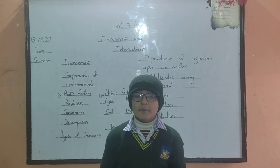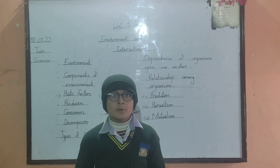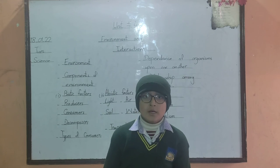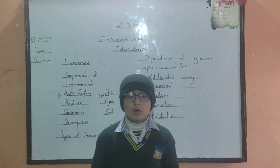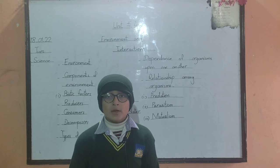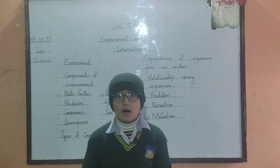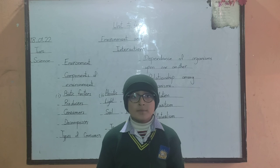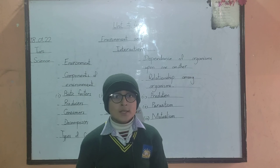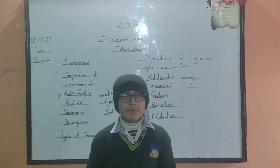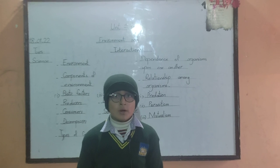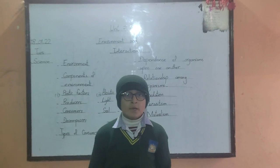Parasitism is a relation in which one organism harms the other but does not kill it. For example, a mosquito drinks human blood but doesn't kill the host. Mutualism is a relation in which both organisms benefit. For example, we give plants carbon dioxide and plants give us oxygen.